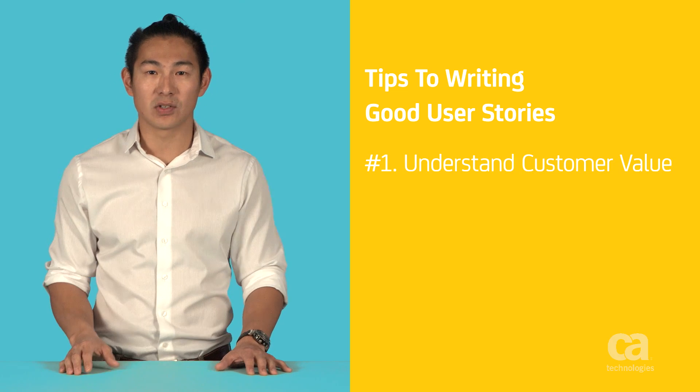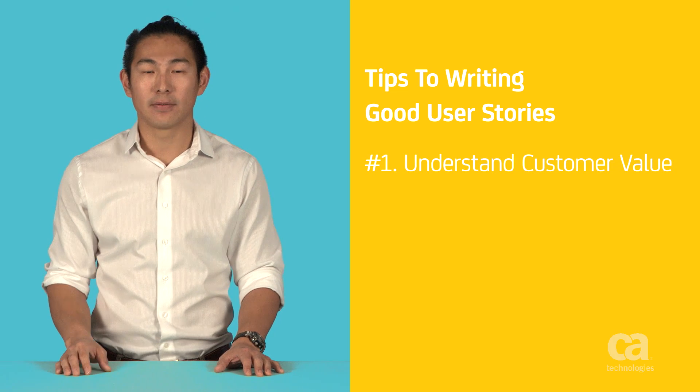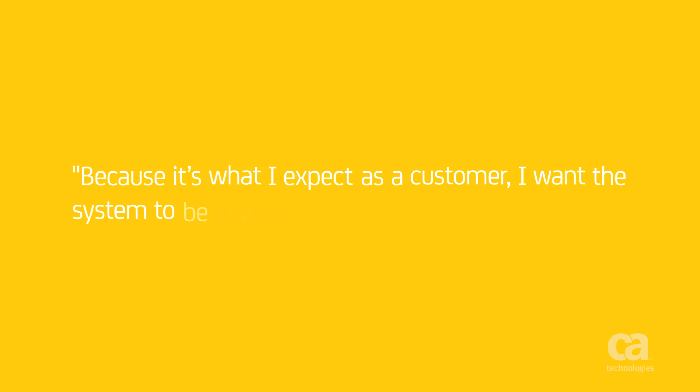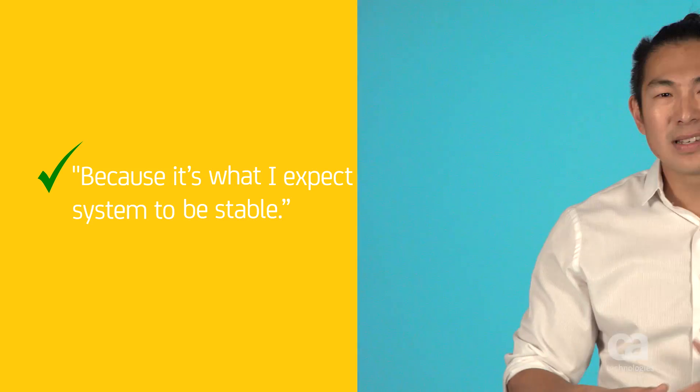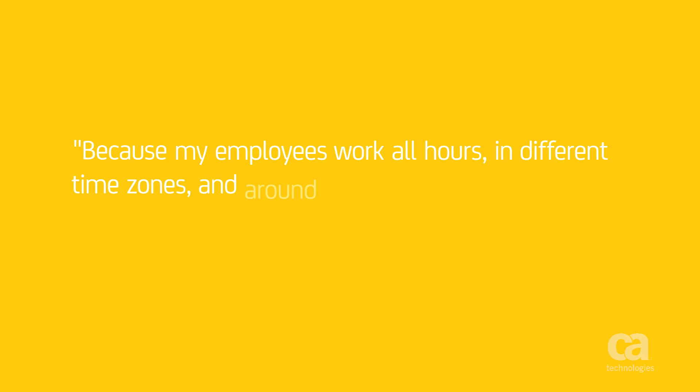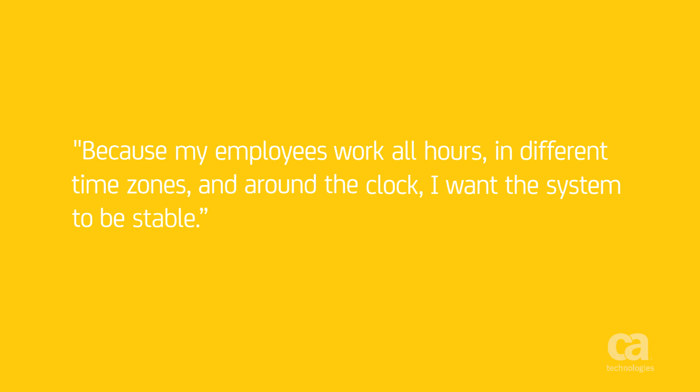Always put yourself in the mind of your customer and the value they will derive. An okay user story might say, 'because it's what I expect as a customer, I want the system to be stable.' This tells me a little bit about the customer's desire for a stable system. But even better: 'because my employees work all hours in different time zones and around the clock, I want the system to be stable.' Now I've learned about what the customer will get out of that stability and why they want it. The actual measurement that defines stability — like X9's availability — would go into the acceptance criteria.